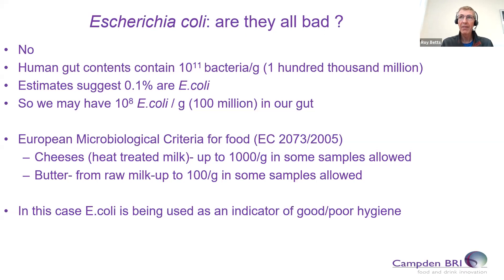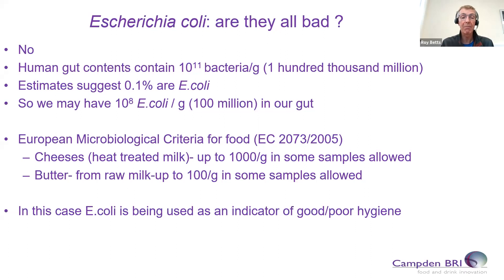That would tend to indicate, since we're all probably feeling fairly well at the moment, these things are not all pathogenic. If we take a look at the European microbiological criteria for foods — the legislation, Regulation 2073-2005 — there's one criterion for cheeses made with heat-treated milk that gives allowable levels of 1,000 per gram E. coli in some sample types. Similarly, criteria for butter made from raw milk give allowable levels of up to 100 E. coli per gram. In those cases, E. coli isn't being used as a pathogen; it's being used as an indicator of good or poor hygiene.